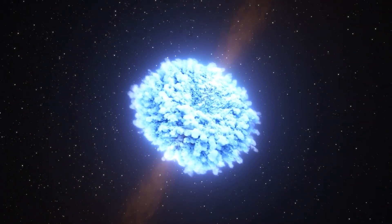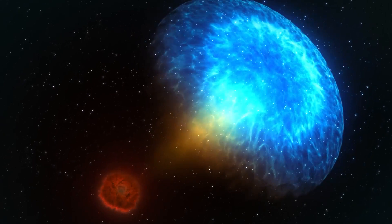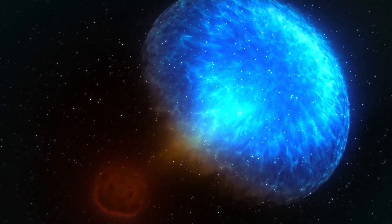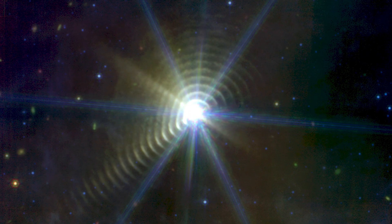Ryan Lau said, we're looking at over a century of dust production from this system. The image also illustrates just how sensitive this telescope is. Before, we were only able to see two dust rings using ground-based telescopes. Now we see at least 17 of them.